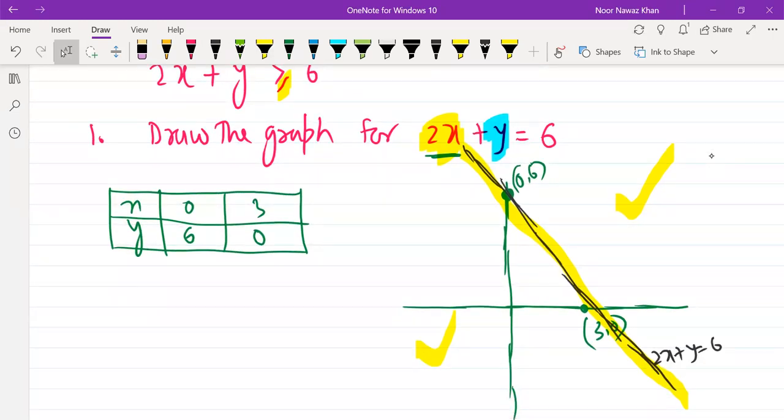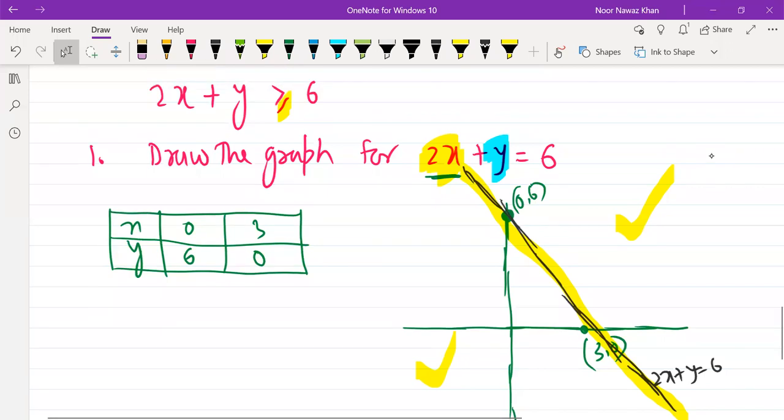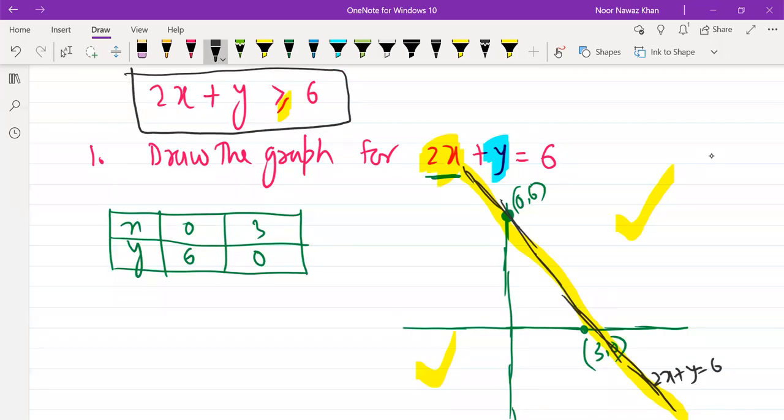Now, you have to place a point in this inequality. We have 2x plus y is more than equals to 6. We have to keep a point. Which point you want to take? I have told you that the easiest is origin. But, you don't pass the line from that point. You don't keep the line from 3 and 0. Because, it will pass from 3 and 0.